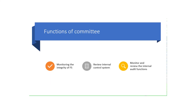Now the functions of the audit committee: number one is monitoring the integrity of financial statements. Before external auditors come in, the audit committee monitors the integrity of the financial statements and points out any flaws or mistakes. Next is to review the internal control system — the audit committee reviews whether the internal control system suggested in the strategy is being implemented as described, and identifies areas needing improvement. Then it monitors and reviews the internal audit functions to see how they are working, and if internal auditors have any problems or suggestions, they contact the audit committee first.